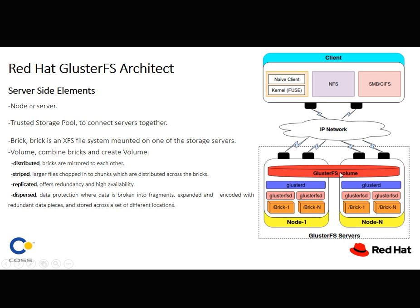On the server side, the elements are: node or server, trusted storage pool — connecting the servers together — meaning the real servers node 1, node 2, node 3, node 4, node N. After that we have a brick with an XFS file system. Then we can combine bricks together to create a volume. Inside the volume, we are able to choose different methods and designs, like distributed, striped, dispersed, or replicated.